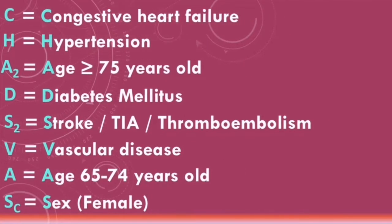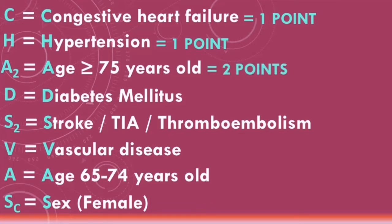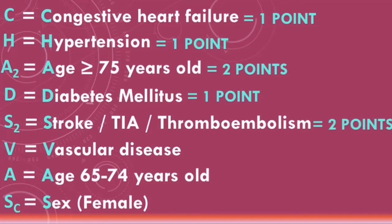A scoring system is used to evaluate stroke risk. Patients with congestive heart failure score one point, as do patients with hypertension. Patients aged 75 or older score two points — this is why there is a 2 in subscript next to the A. Patients with diabetes mellitus score one point. Patients with a previous stroke, TIA, or thromboembolism score two points, which is why there is a 2 in subscript next to the S.